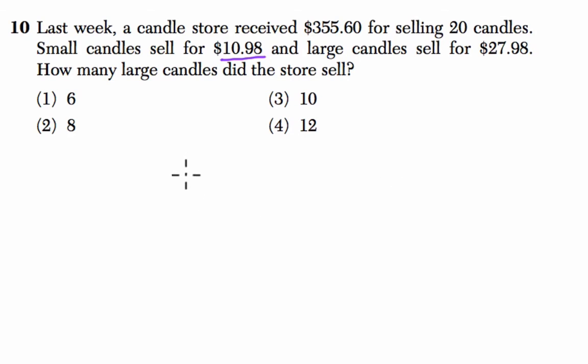This is a system of equations question because they tell us that they sold 20 candles. Let's say X is our large candles and Y is our small candles. There's two kinds of candles, large and small. There are 20 total sold.